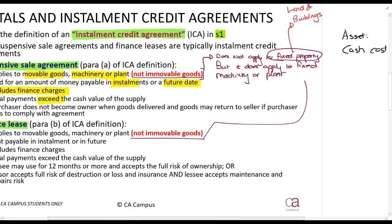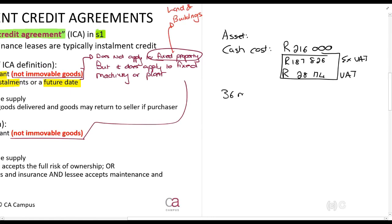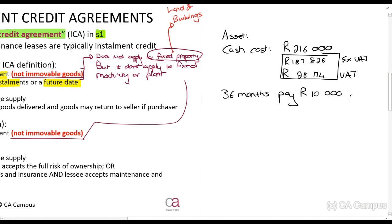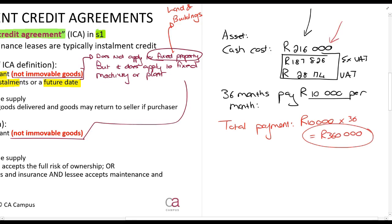I go and buy this under a suspensive sale agreement. In terms of the suspensive sale agreement, I say: for 36 months, pay 10,000 rands per month. So what is my total payment going to be? My total payment is going to be 10,000 rands times 36 months — that is 360,000 rands. And you can see that 360,000 is more than the 216,000.